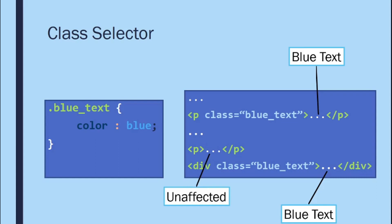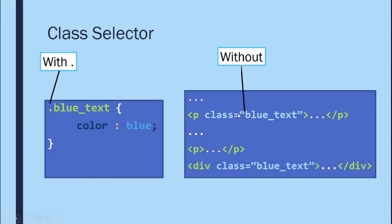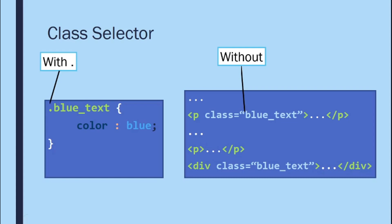The class selector can be applied to more than one HTML element. Every element with the same class will inherit the declared rules. In the CSS declaration, the class uses a dot prefix. In HTML, you add it as an attribute — the attribute name 'class' followed by the class name in quotes, separated by an equal sign. No dot is needed in the HTML attribute.